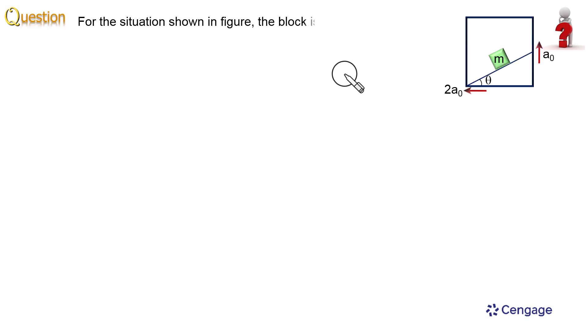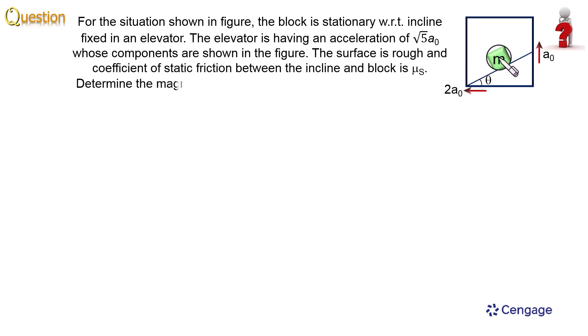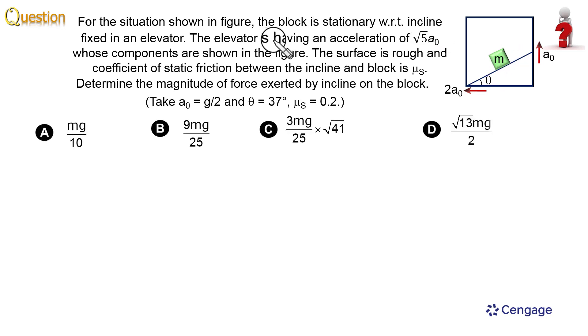In this question, you can follow this figure which consists of an elevator. In this elevator, you can observe an inclined plane. On this inclined plane we have a block of mass m which is stationary with respect to this incline. This elevator is moving with acceleration √5a₀, and you can observe in this figure the components of this acceleration: a₀ in the upward direction and 2a₀ in the horizontal leftward direction.